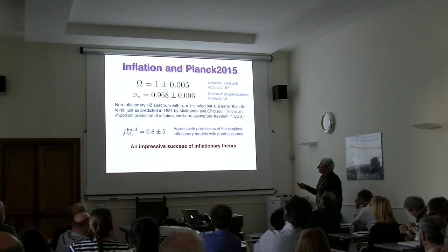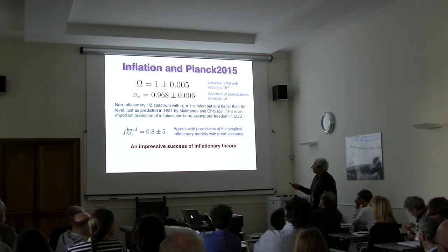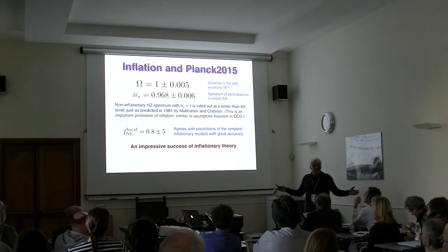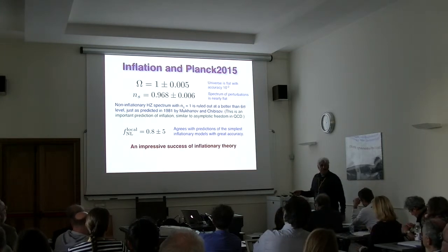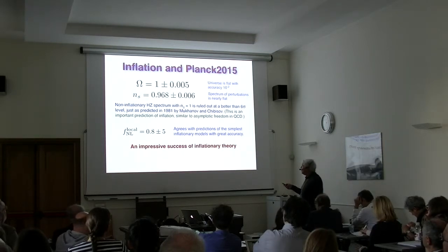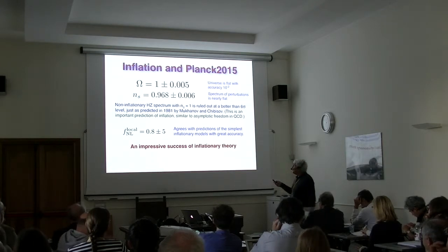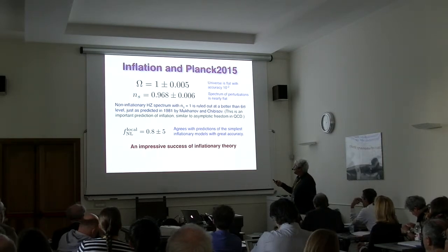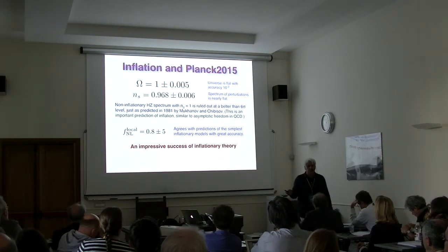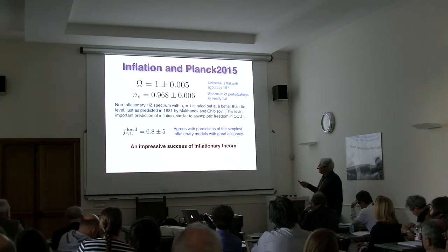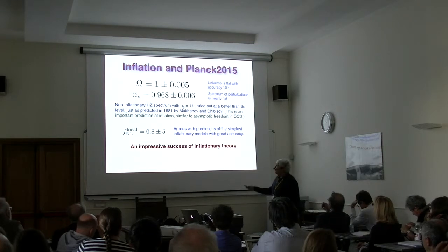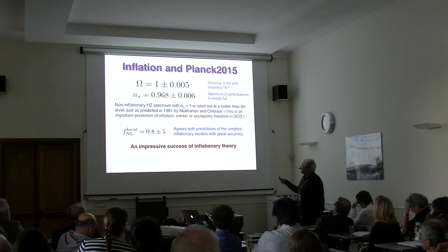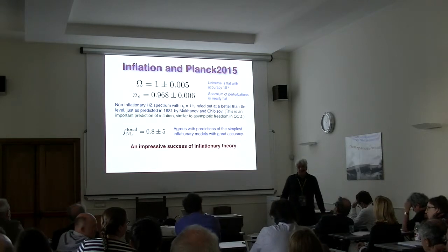Omega is equal to 1 — instead of 0.3, this is what we have now. ns is firmly established to be close to 1 as predicted, but also not exactly 1. These estimates were given by Mukhanov and Chibisov in their study of the Starobinsky model back in 1981. This small deviation of ns from 1 is crucial.